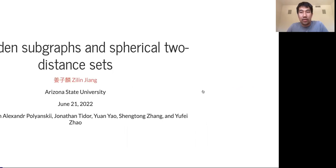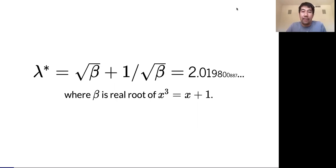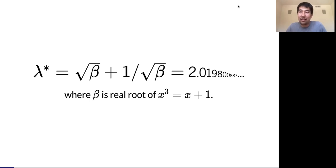I will start my talk with a constant. This constant is defined algebraically: it's the root of β plus the reciprocal of that, where β is the unique real root of the cubic equation X³ = X + 1. You don't need to remember all the details, but keep in mind this is just a constant slightly larger than two — specifically 2.0198...